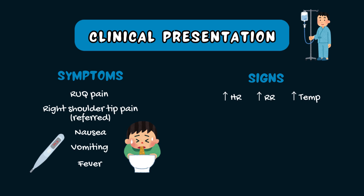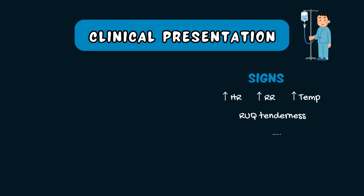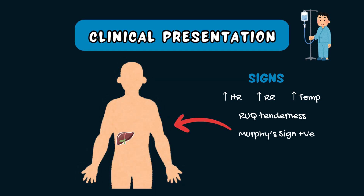They may also be febrile. On palpation of the abdomen, they will have tenderness in the right upper quadrant region. The patient will also be positive for Murphy's sign, which is highly suggestive of acute cholecystitis. Murphy's sign can be tested by placing your hand in the right upper quadrant region at the midclavicular line, just over where the gallbladder sits, and then asking the patient to inhale deeply. The inflamed gallbladder moves downwards and makes contact with your hand, causing sudden pain, and the patient will stop inhaling abruptly due to the discomfort.